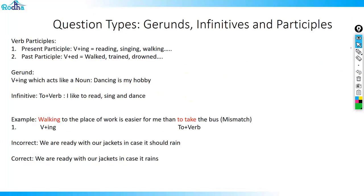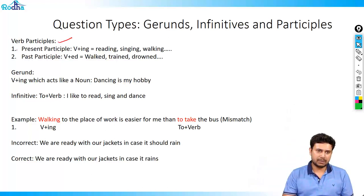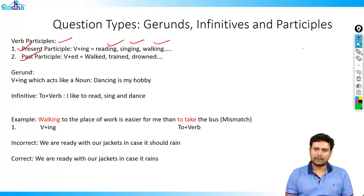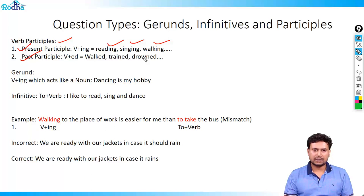Now, what happens when you have gerunds, infinitives, and participles? These are all forms of verbs. For verb participles, you have either a present participle or a past participle. A present participle is the ing-form of the verb — examples: reading, singing, walking. A past participle is the second form of the verb — examples: walked, trained, drowned.